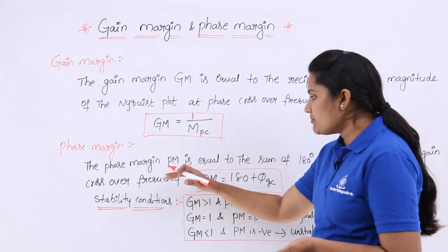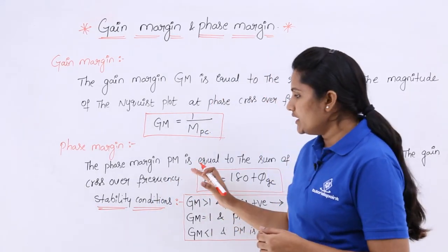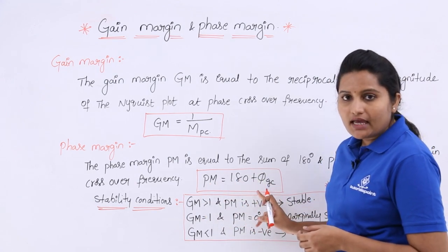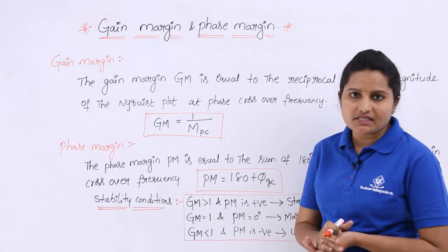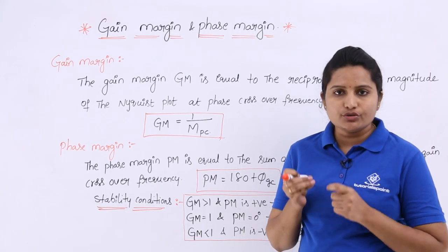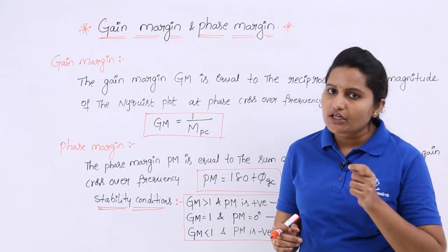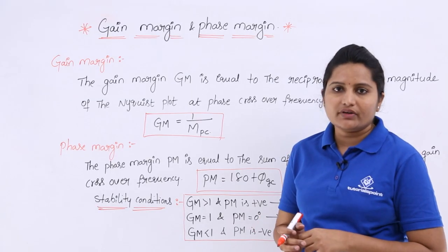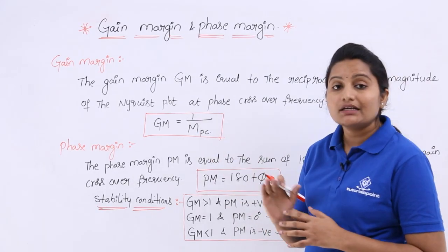Coming to phase margin, the phase margin is equal to 180 degrees plus the phase angle at the gain crossover frequency. Phase margin is represented as PM and equals 180° + phase angle at gain crossover frequency. Gain crossover frequency is the frequency at which the magnitude of the Nyquist plot is equal to unity. At that gain crossover frequency we consider the phase angle, and adding 180 degrees to that gives the phase margin.